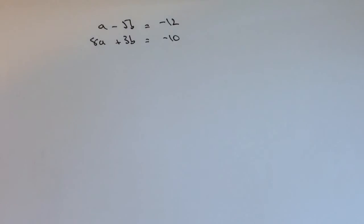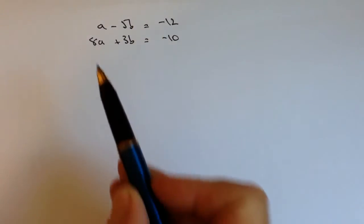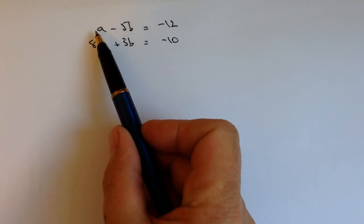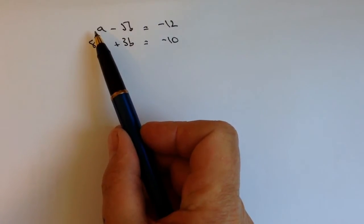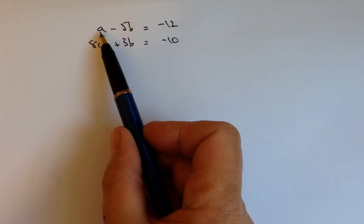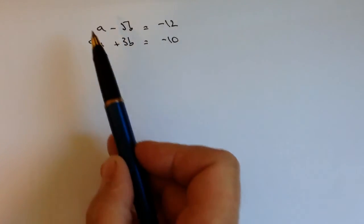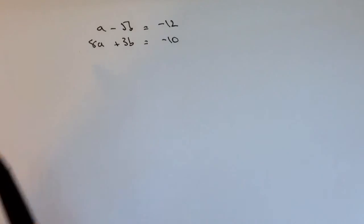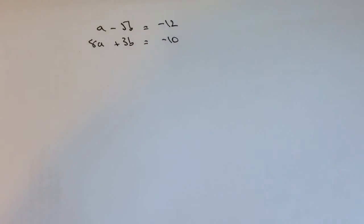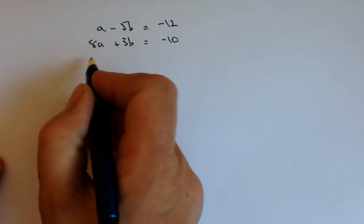So what I'm going to do is multiply the first equation by 8, because if I do that this will become 8a. Then I've got 8a in both equations, and I'm going to take the two away from each other, so I'm going to get 8a take away 8a, and that means I will lose that particular part of the equation. So let's have a go at that.